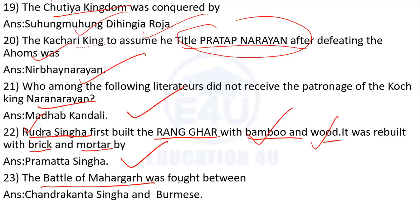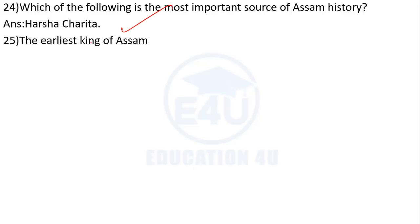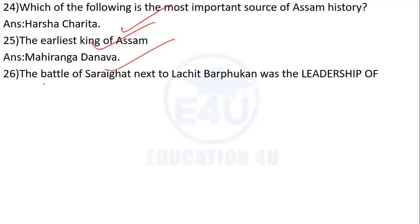The Battle of Mahargarh — who fought in it? It was fought between Assam and Burma forces. The most important source of Assam history is the Buranjis (Ahom chronicles). The earliest king of Assam was Mahiranga Danava.